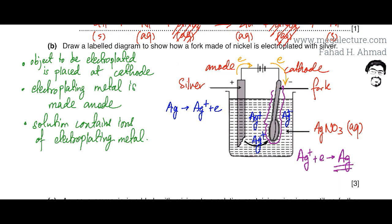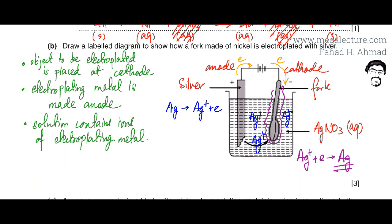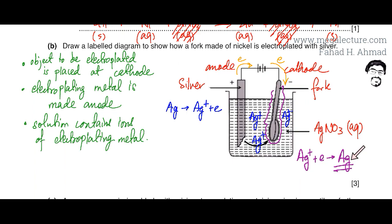At the anode, silver loses electrons and gets oxidized, producing Ag⁺ ions in solution. The battery transfers those electrons to the cathode, where the silver ions gain the electrons back, and silver metal is produced again — forming the electroplated coating on the fork.